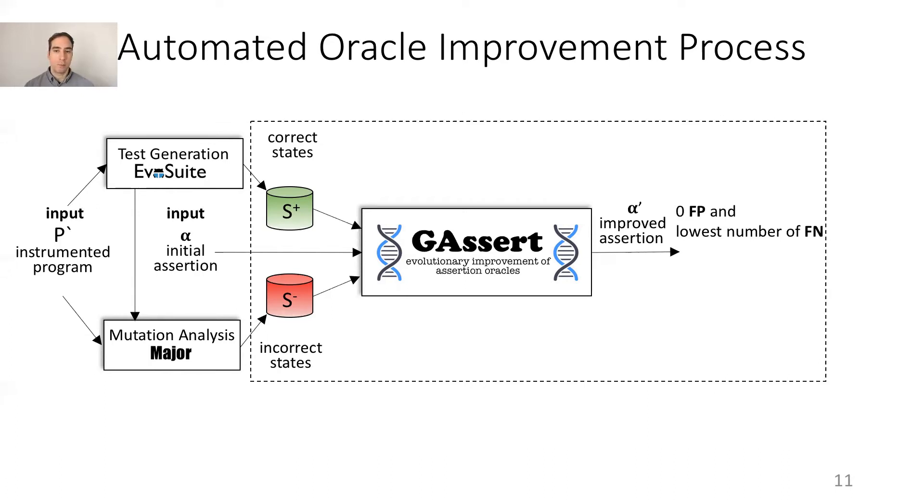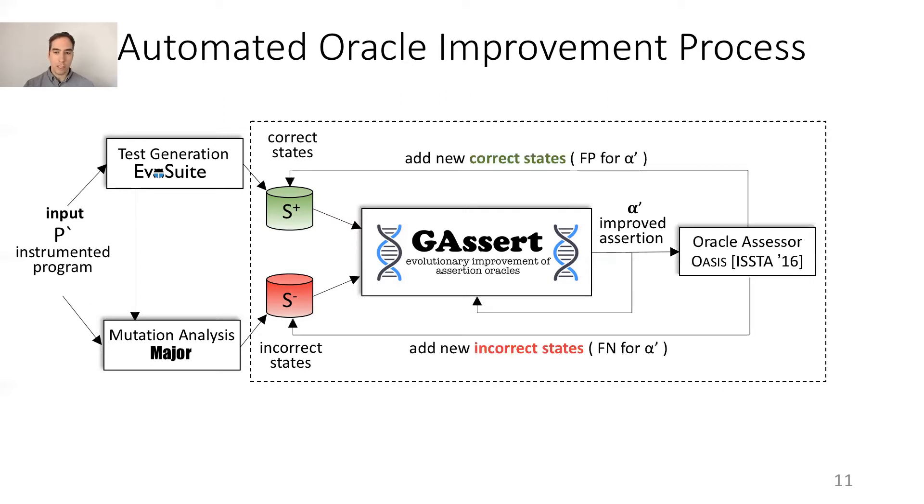We want zero false positives because false alarms trigger an expensive debugging process where the bug is likely in the assertion itself. Then J-Assert gives alpha prime to Oasis to search for new false positives and false negatives. If it finds them, it will add the resulting program state into our repository of correct and incorrect states. J-Assert will then improve alpha prime and a new iteration will start. This process continues until the time budget expires or Oasis cannot find new false positives and false negatives.